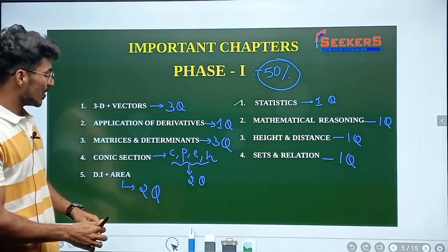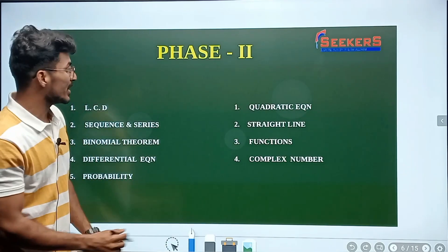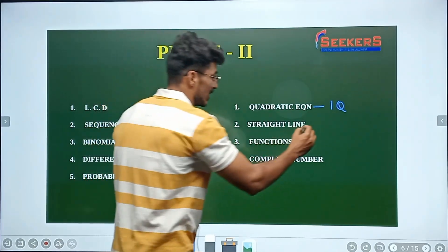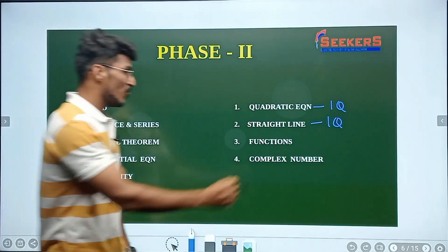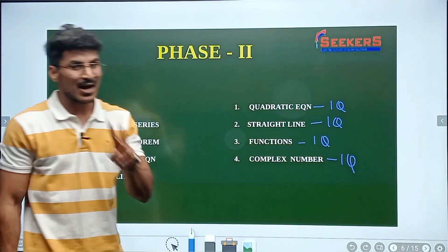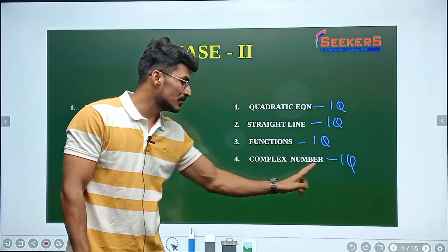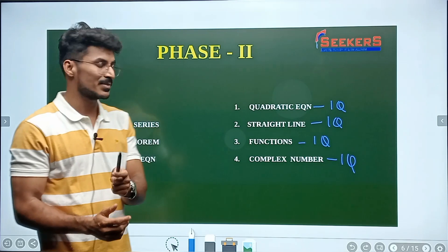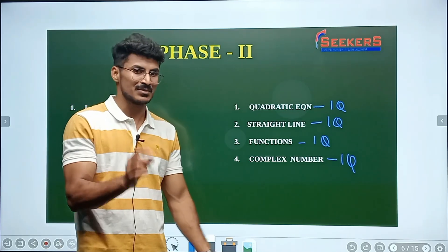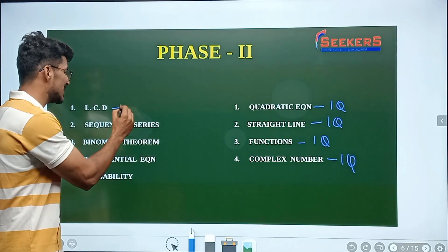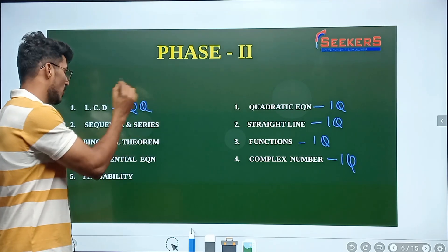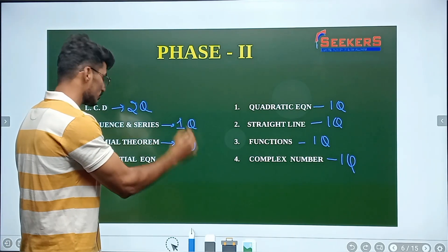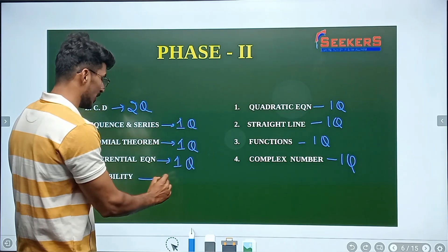Coming to phase two topics: quadratic equations — one of the easiest topics as far as JEE is concerned. Straight lines one question, functions one question, complex numbers one question. For complex numbers, part one is enough for JEE Main. Limits, continuity, and differentiability: two questions. Sequence and series: one to two questions. Binomial theorem: one question. Differential equations: one question. Probability: one question.